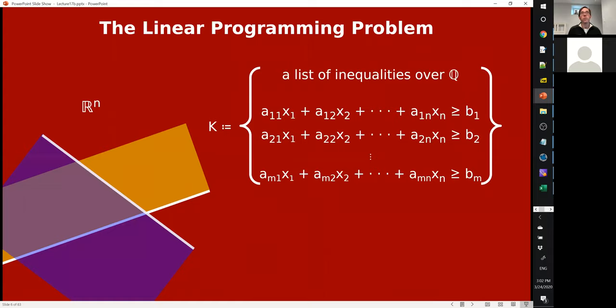K is supposed to represent the conjunction of these inequalities, so we have a conjunction or intersection, if you will, of half-spaces. Their intersection is the set K—it's like a polytope represented by these inequalities.